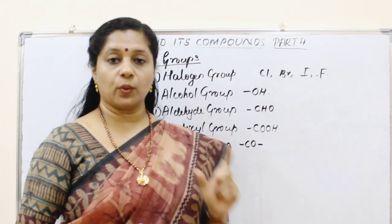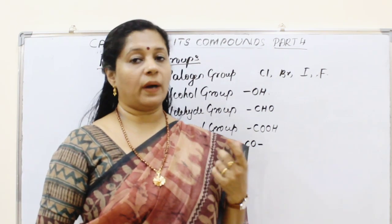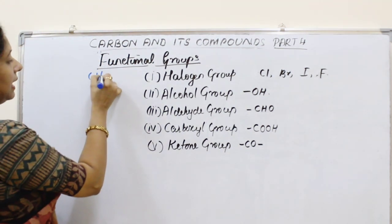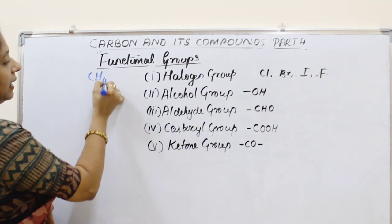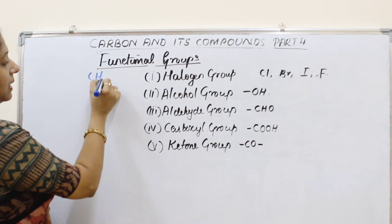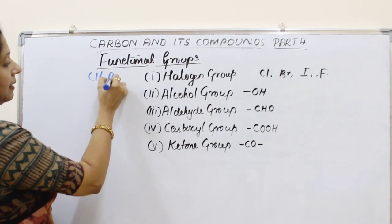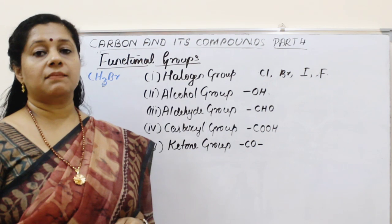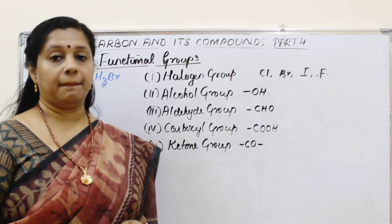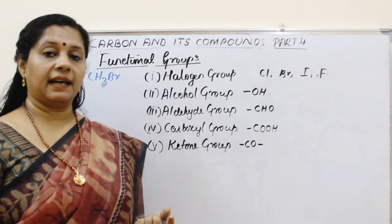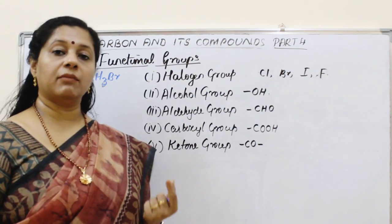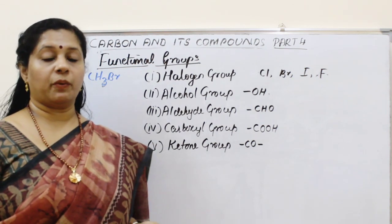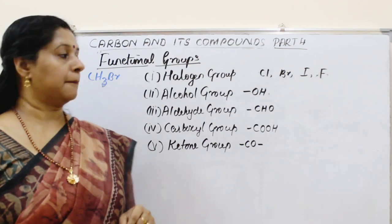If halogens are attached to an alkane, we call it chloroalkane or bromoalkane and so on. We are studying only 2 examples in NCERT: chloroalkane and bromoalkane. For example, CH4 is methane; if we remove one hydrogen it becomes CH3, and adding bromine gives bromomethane. Similarly, adding chlorine gives chloromethane, or chloropropane and bromopropane for propane.